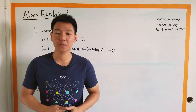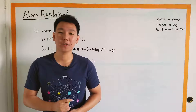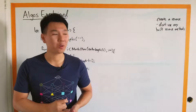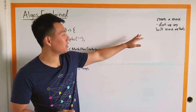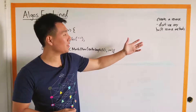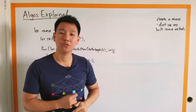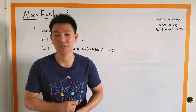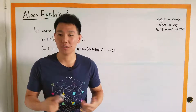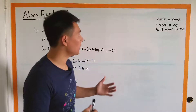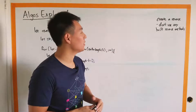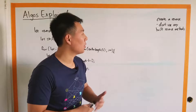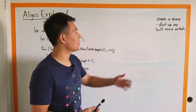Hey guys, welcome back to Algo's Explained. I'm David Kim and today we're going to go over another problem. It is going to be reversing an input, which is going to be a string, and not using any of the already built-in reverse functions. It's a pretty simple one to grasp today, but let's still think about how we're going to approach this.